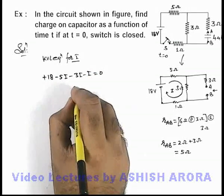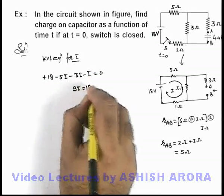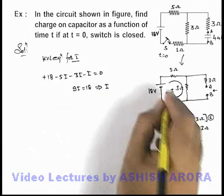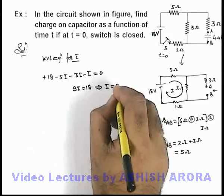This can be written as 9i is equal to 18, which implies the value of current in the circuit, in this loop of the circuit, is equal to 2 ampere.